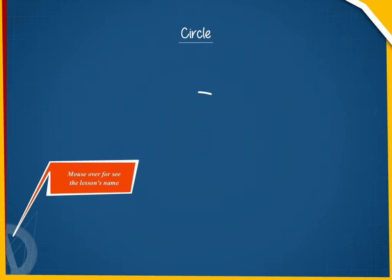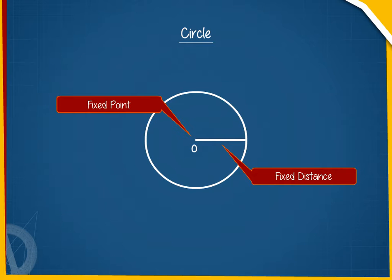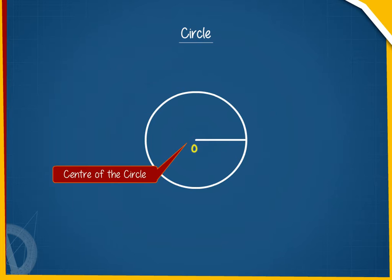Circle. A circle is a closed path which is always at a fixed distance from a fixed point. The fixed point O is called the center of the circle and the fixed distance is called the radius of the circle.